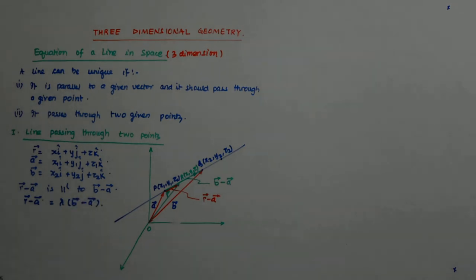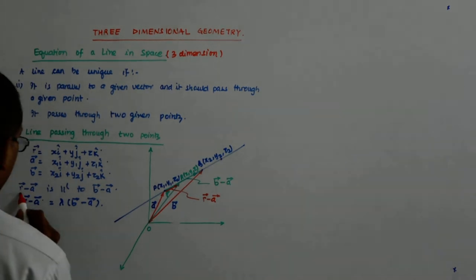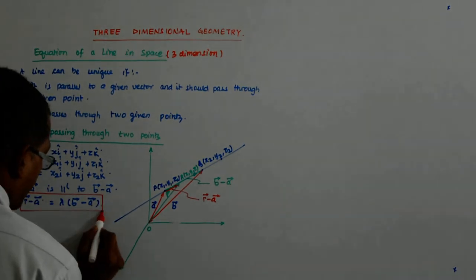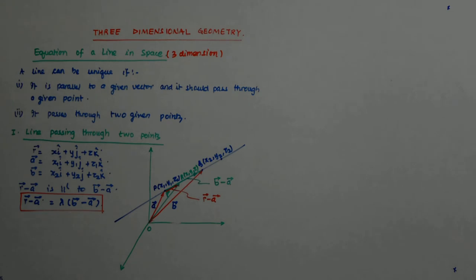I can pretty well say that R minus A is equal to lambda times B minus A. Do we get that? Simple. No complications? Now, so this is the vector form. That's all. Done. This is the vector form of the equation.